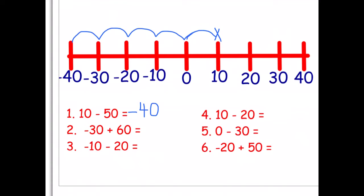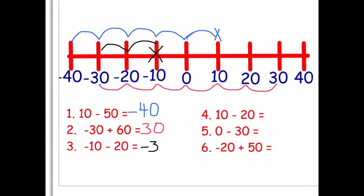Number two: we're on minus thirty and we're adding sixty — one, two, three, four, five, six — we finish on thirty. Number three: we're on minus ten, or negative ten, and we're taking away twenty more — ten, twenty — so we finish on minus thirty, or negative thirty.